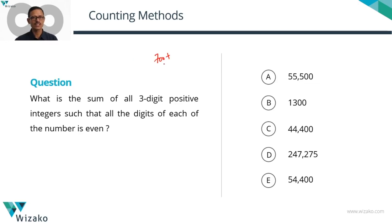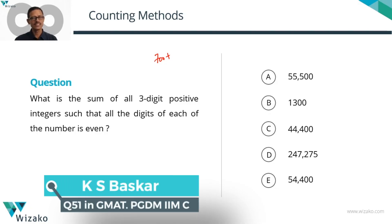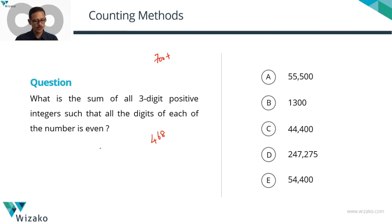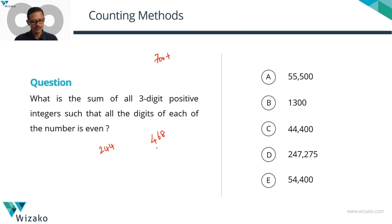This is a 700-plus question from counting methods. What is the sum of all three-digit positive integers such that all the digits of each number are even? For example, a number like 468 — all digits are even. Or 244 — all digits are even. Digits can repeat, but all digits should be even. We need to find the sum of all such numbers, adding them all together.